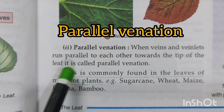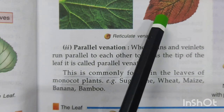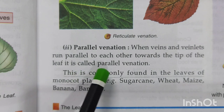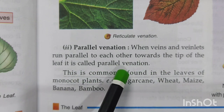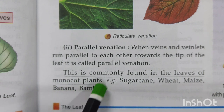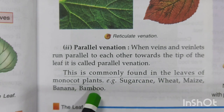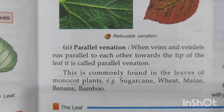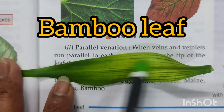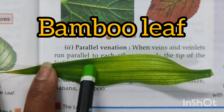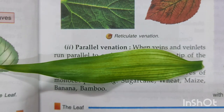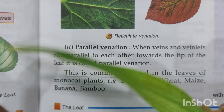Coming to the next type of venation — parallel venation. When the veins and veinlets run parallel to each other, like parallel lines, that kind of venation is known as parallel venation. This is found in the leaves of monocot plants like sugarcane, wheat, maize, banana, and bamboo. I have managed to bring a bamboo leaf to show you — have a look at the venation; the veinlets are running parallel to the midrib.